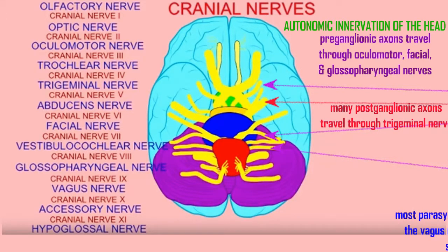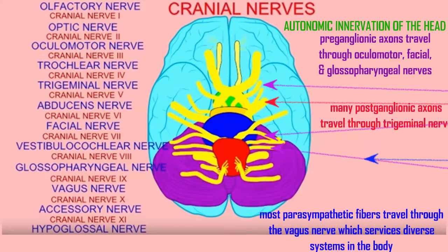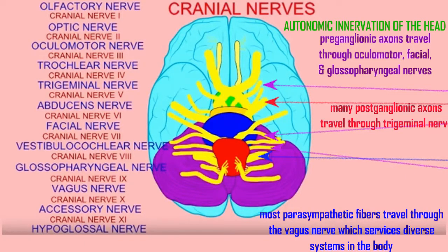The vagus nerve, cranial nerve 10, is extremely important because 80 to 90 percent of the parasympathetic division's fibers — which are going toward the heart, the lungs, the digestive system, etc. — travel through the vagus nerve.